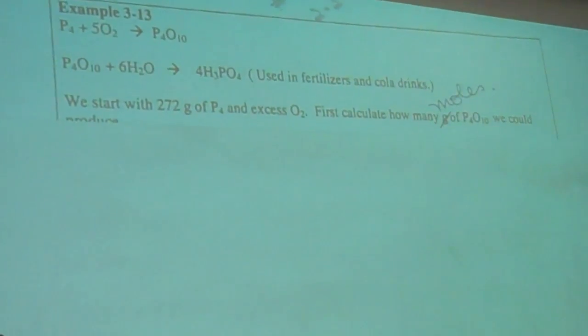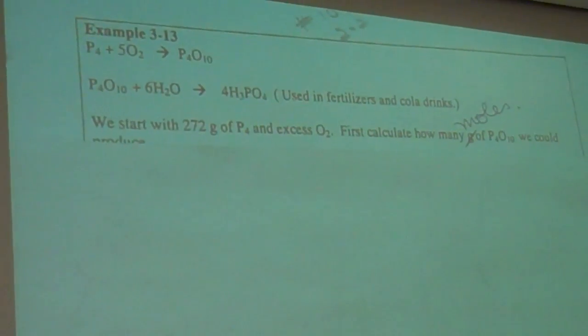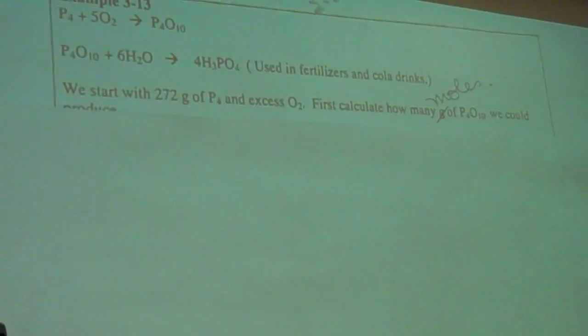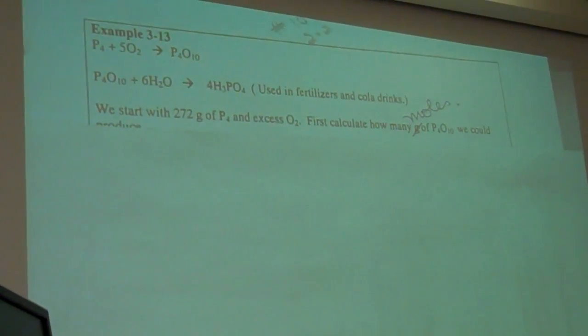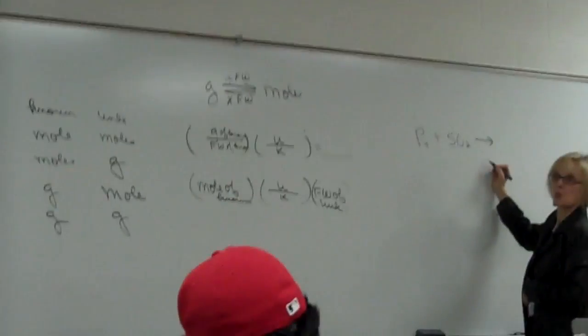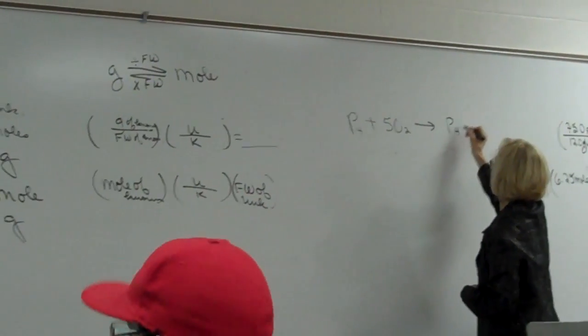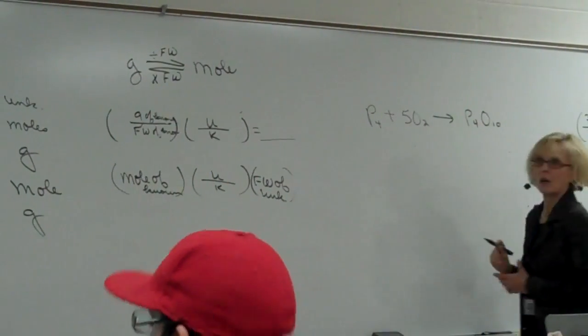When you purchase phosphorus, it's P4. It's one of those things that's really not monatomic nor diatomic. It's an exception, but you don't have to remember it. We're going to react it with oxygen. In other words, we're burning the stuff.